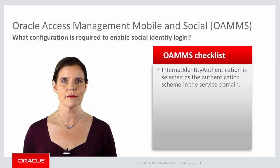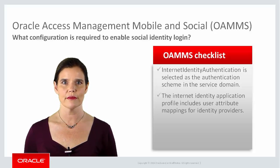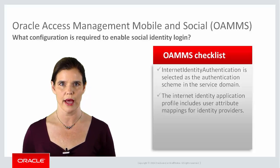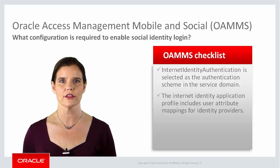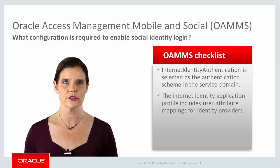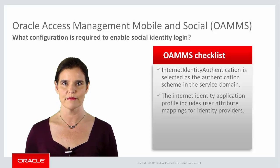Internet identity authentication must be selected as the authentication scheme for the service domain. This is a setting that enables Mobile and Social to serve as a relying party, or RP, when interacting with identity providers like Facebook, Twitter, LinkedIn, Google, and Yahoo. The domain must contain an Internet Identity Application profile that includes user attribute mappings for each identity provider, such as Facebook or LinkedIn, that will be made available to the end users. The mappings specify the user attributes that you want the social identity provider to return to the application. For a MAF application, you might return attributes such as the user's email address, language, time zone, first name, and last name.